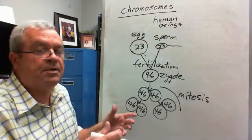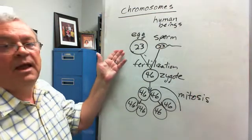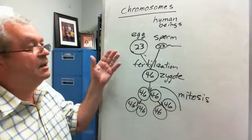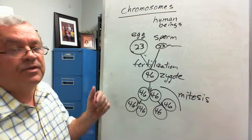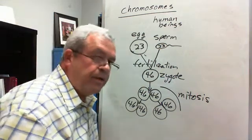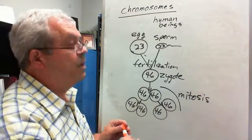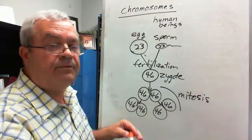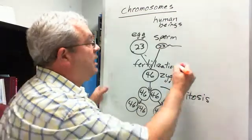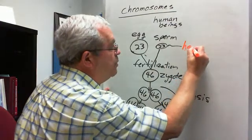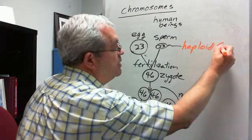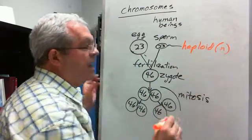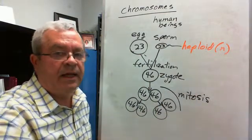For other organisms, it may be 20 and 40, it may be 5 and 10, it may be 7 and 14, it may be 500 something and a thousand something, but for every sexually reproducing organism, there's a half number and a full number of chromosomes. The half number is called the haploid number of chromosomes, symbolized by n, and sometimes 1n.